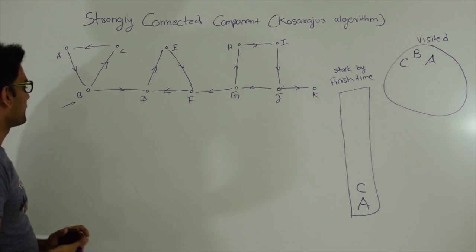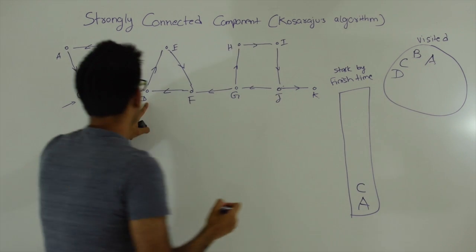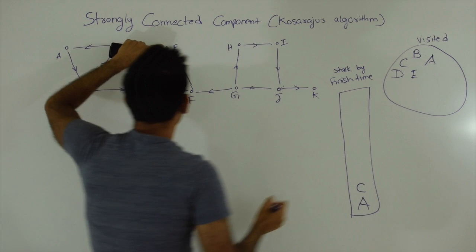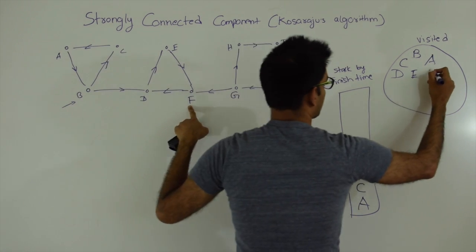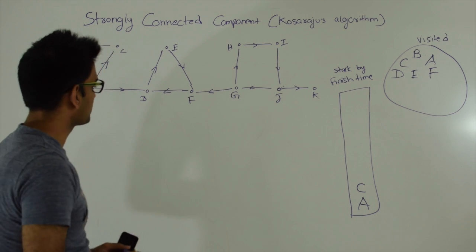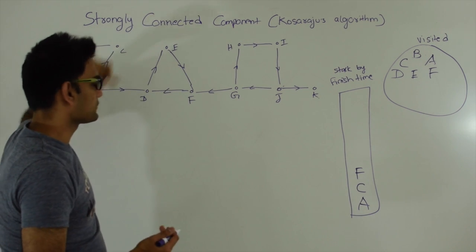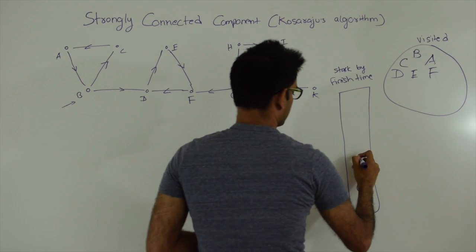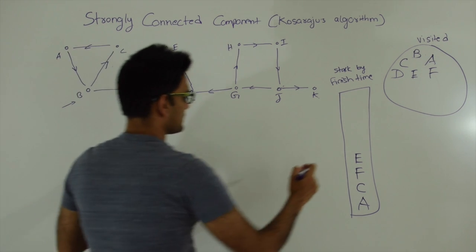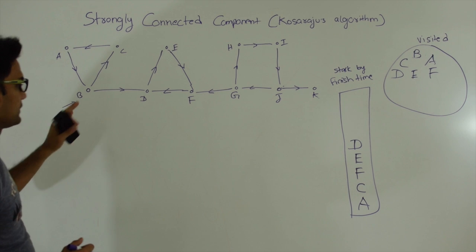Then we come to B and B has another child D. D is not in visited so we put D in visited. Then D has another child E and E is not in visited so we put E in visited. E has another child F and F is not in visited so we put F in visited. F has child D but D is already visited, so F has no more children and we push F into the stack. Then E has no more children so we push E, then D has no more children so we push D. From D we go back to B, and at this point B has explored all its children, so we push B into the stack.